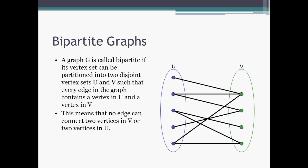To begin our discussion of bipartite graphs, we'll start off with the definition. A graph G is bipartite if its vertex set can be partitioned into two disjoint vertex sets, U and V, such that every edge in the graph contains a vertex in U and a vertex in V. We know that any graph is made up of a set of vertices and a set of edges. If the vertices can be split up into two sets such that the vertices in U aren't also in the set V, we know that the sets of vertices are disjoint. If for every edge, one vertex is in U and its other vertex is in V, then this graph is called bipartite.